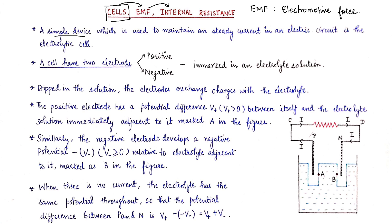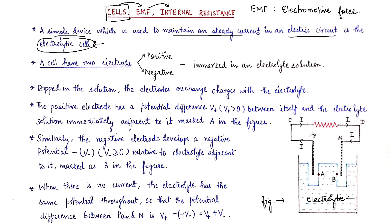A cell is a simple device used to maintain a steady current in an electric circuit. These cells are known as electrolytic cells — cells having an electrolyte and electrodes in them. Please look at the figure. The electrolyte is a solution having an ion- or electron-dispersing solute in it.